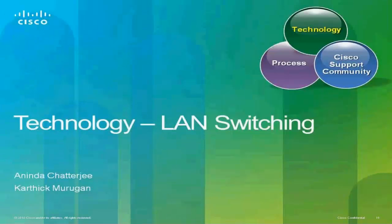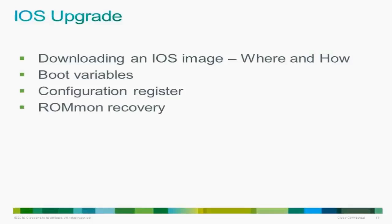The basic agenda for the technology session is we're going to start off with IOS upgrades, covering boot variables, config registers, ROMMON and recovery. We'll move on to high CPU, covering most of your Catalyst platforms: 3K, 4K, and the 6500. We'll finish with a live demo of high CPU troubleshooting. From there we'll talk about crashes, layer 1 troubleshooting, and information you can pull out of the show interface output.